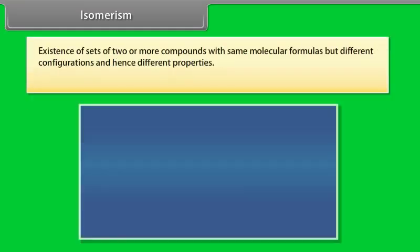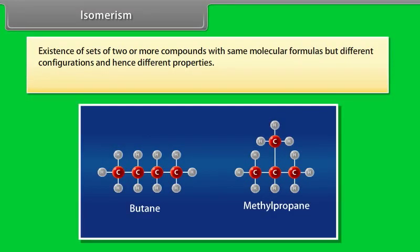Isomerism is the existence of sets of two or more compounds with same molecular formulas but different configurations and hence different properties. The compounds are called isomers.